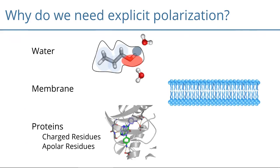Now for polarizable charge models. One reason we need explicit polarization: when a molecule is in water, then in a membrane, then in a protein binding pocket, the electrostatic environment changes considerably. One fixed set of charges is probably not representative for all those environments. We're trying to make a polarizable force field with a parameterization scheme that is as cheap as possible.